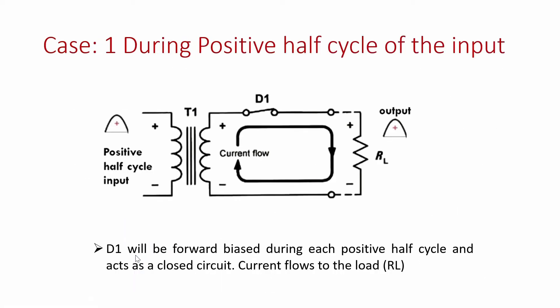During the positive half cycle, the polarity across the transformer secondary is plus and minus, with plus connected to the anode of the diode. The diode is therefore forward biased and acts as a closed switch, completing the circuit. Current flows through the load RL, and output voltage is measured across RL as V = I × RL. So during the positive half cycle, the diode is on, the circuit is closed, and output voltage equals I × RL.